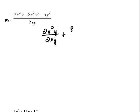So we can now change this so that we are rewriting each term over the 2xy. And then the second term, oops, that's an x, sorry about that. That's 8x squared y squared over 2xy. And then we have negative xy squared over 2xy.